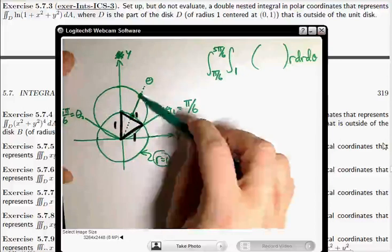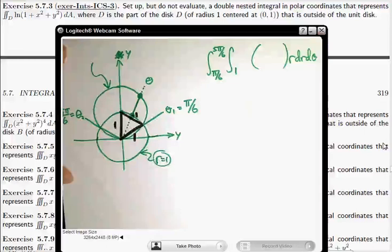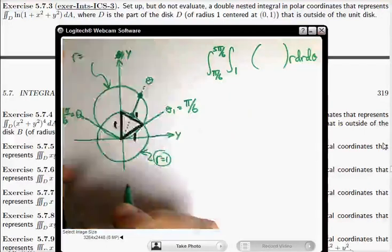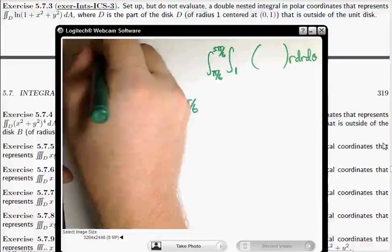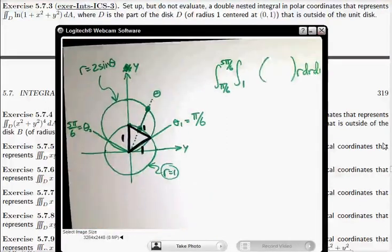What's the value of r on that point? Well, that point's on this curve. This curve has polar equation r equals 2 sin θ. Now, you can check that. You can write down the rectangular equation, work it out, claim it's 2 sin θ. And it's a good exercise.